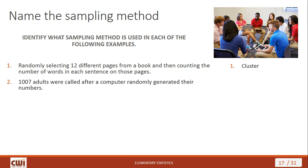Next example: 1,007 adults were called after a computer randomly generated their numbers. This is random sampling — the computer randomly generates the numbers, and that's what you go with. A clear case of random sampling.